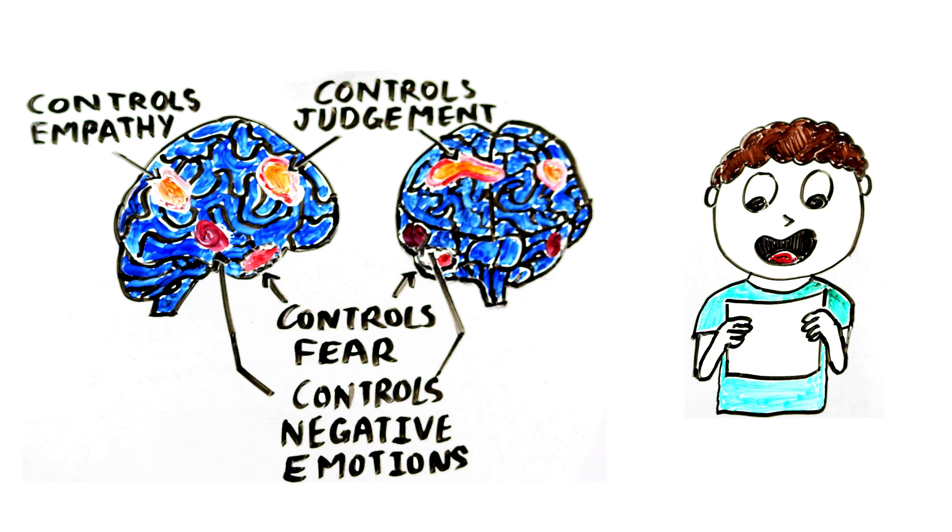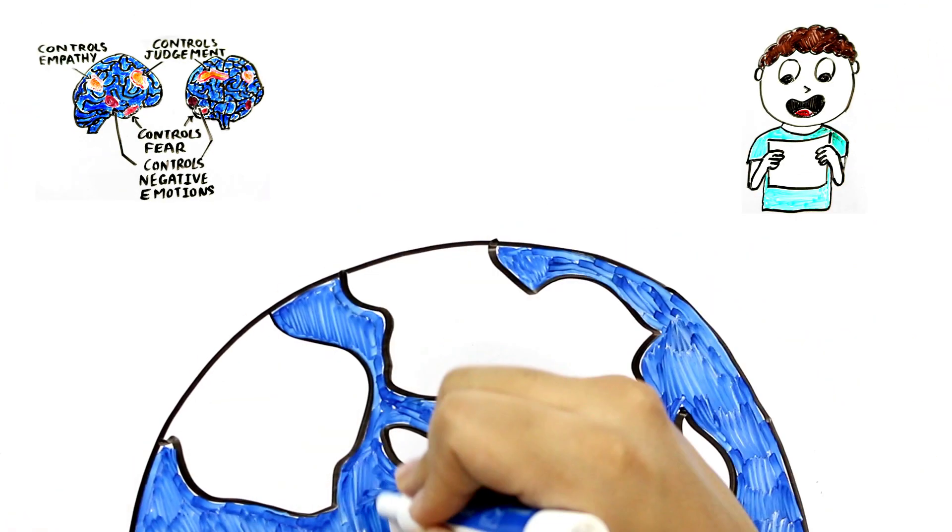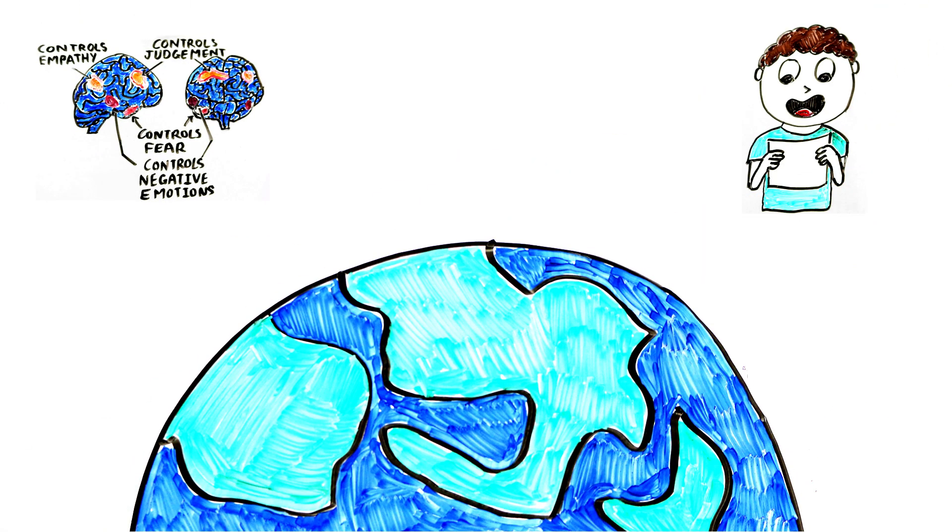Other areas shut down including the amygdala which controls fear and mid-temporal cortex which controls negative emotions. Scientists believe the brain may behave in this way for higher biological purposes, as it makes reproduction more likely. If judgment is suspended, the most unlikely pair can get together and reproduce.